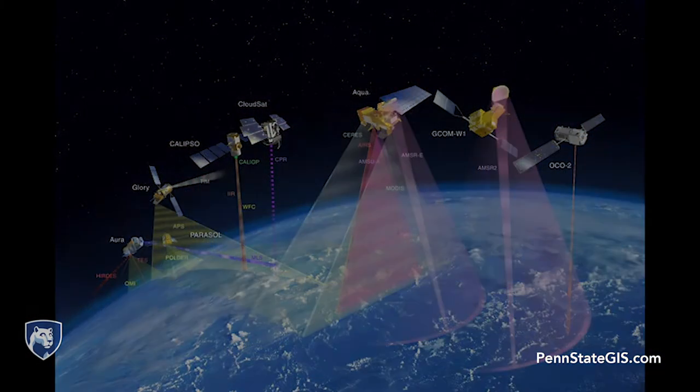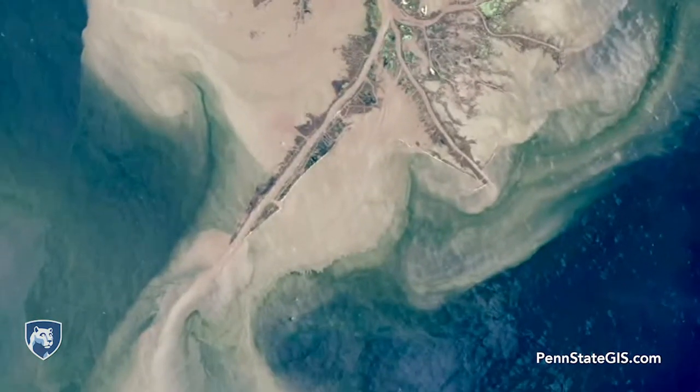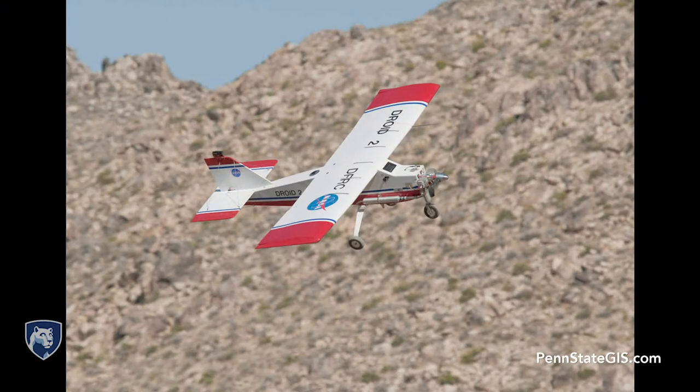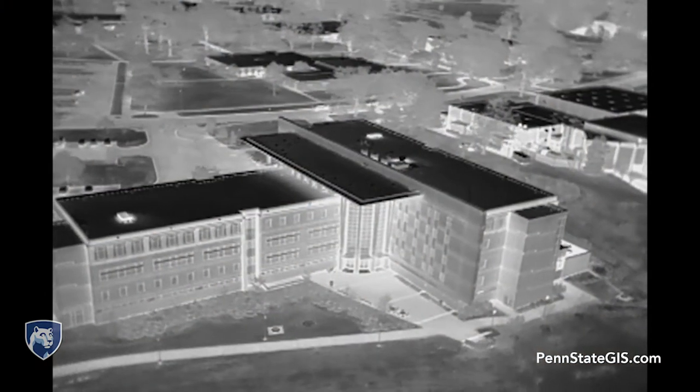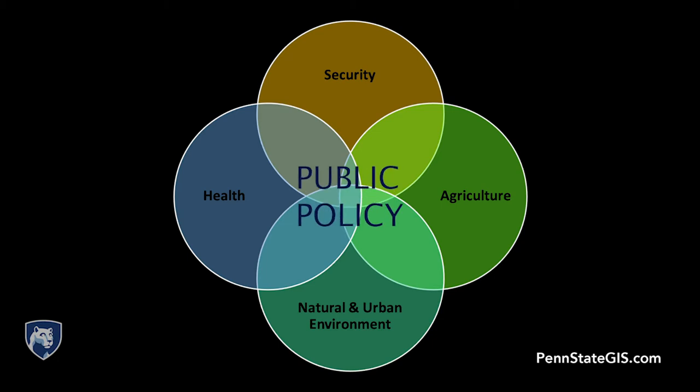Remote sensing is a relatively new discipline that has come to maturity in the past decade or so due to the confluence of several different disciplines and technologies like physics, engineering, computer science, the internet, and sensors, and their deployment on platforms ranging from satellite constellations, aircraft, and unmanned aerial systems. The deployment of novel sensors like multispectral, hyperspectral, radar, and lidar, to name a few, has created a data deluge, and this data needs to be converted into information such that it goes to work in the public policy domains.